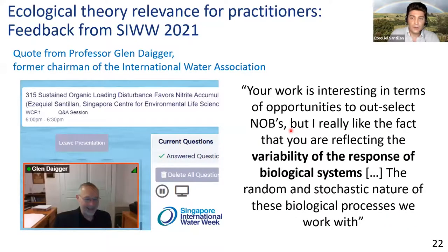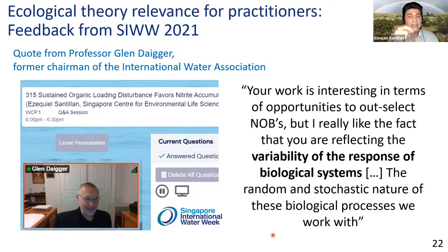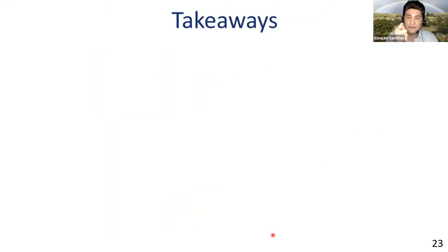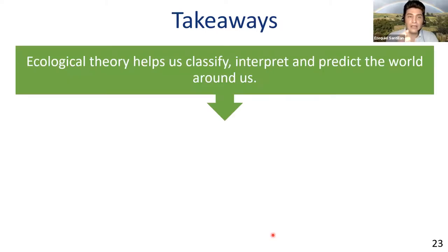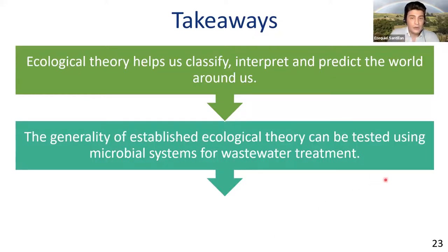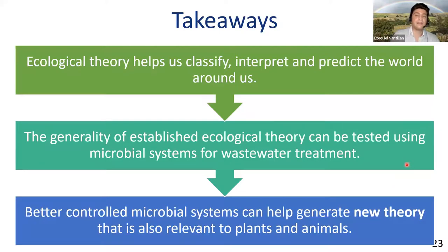I want to share a quote from Professor Glenn Diger, former chairman of the International Water Association, who attended my presentation at Singapore International Water Week last July. He emphasized the relevance of studying the variability and sometimes stochastic nature of the biological processes we depend on for wastewater treatment. My three takeaways are: ecological theory helps us classify, interpret, and predict the world around us; microbial systems for wastewater treatment provide a great opportunity to test the generality of established ecological theory; and since microbial systems are easier to control than plant or animal systems, they can help generate new theory relevant to all organisms and lead to further innovations in wastewater treatment.